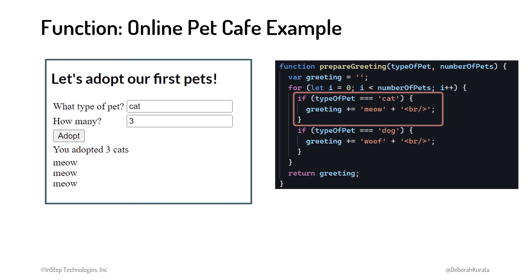This is the function body where we prepare the greeting. If it's a cat, we add a meow for each pet. If it's a dog, we append woof for each pet. We then return that resulting greeting to the main set of instructions.